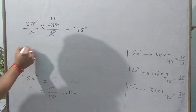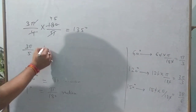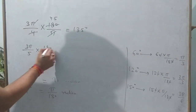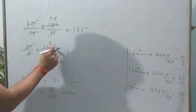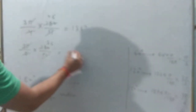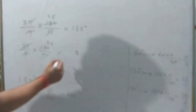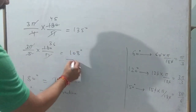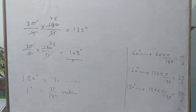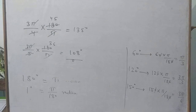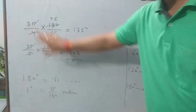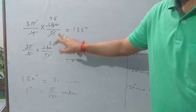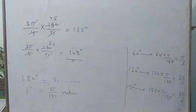For example, 3 pi by 5 radians: multiply by 180 upon pi. Pi cancels, giving 3 times 180 divided by 5, which equals 108 degrees. So: when angle is in degrees, multiply by pi by 180 to get radians. When angle is in radians, multiply by 180 upon pi to get degrees. This is used in polar form, which is why it is explained first.